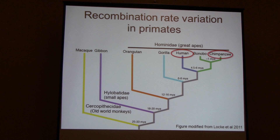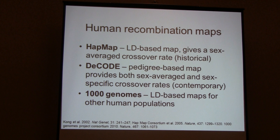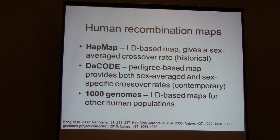Several people have talked about different recombination maps in humans. There are two major ones built over the last decade. One is HapMap — an LD-based map giving us a sex-average, historical overview of recombination across the genome. The other is the deCODE map, a pedigree-based direct estimate that allows us to look at both sex-average and sex-specific crossover rates, giving a contemporary map of the human genome.